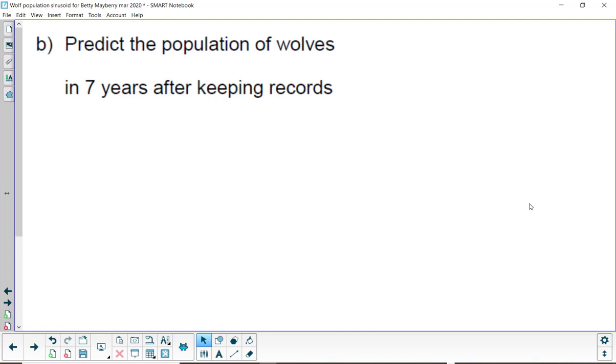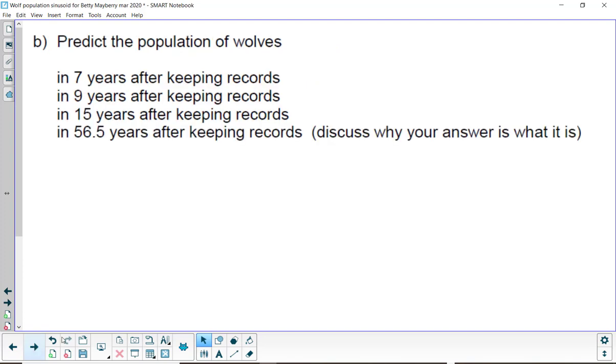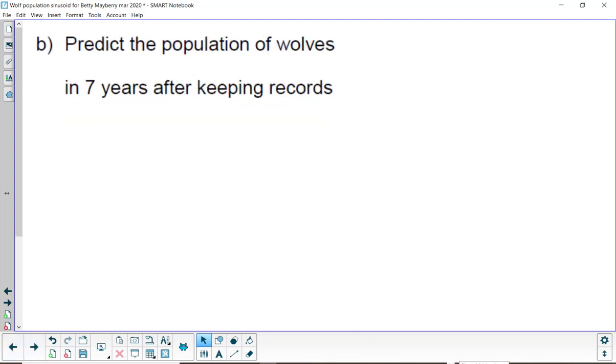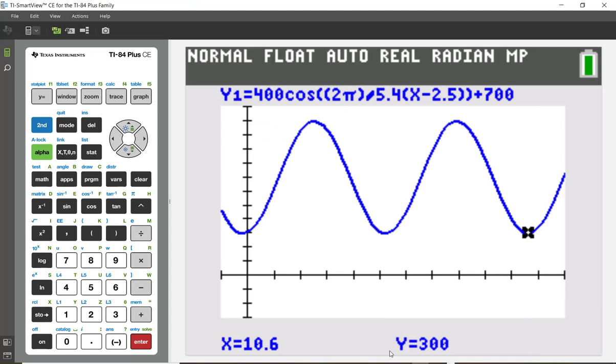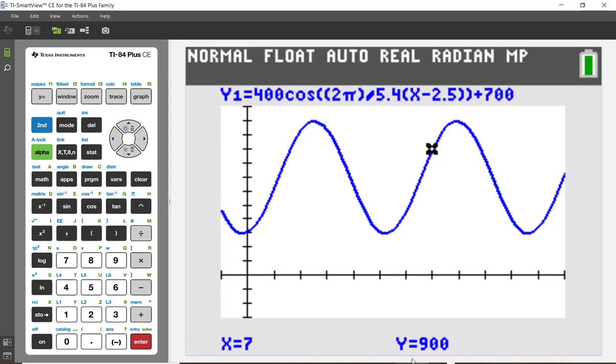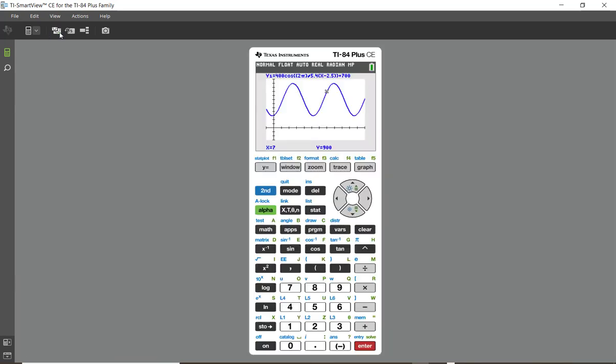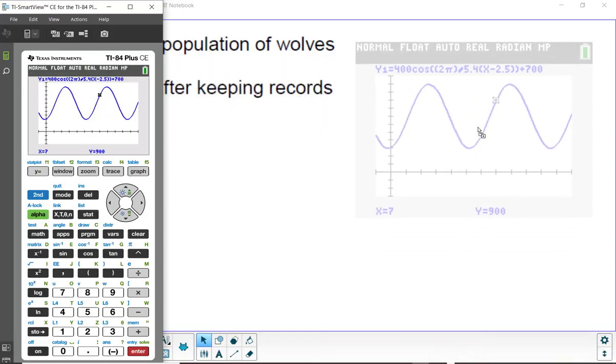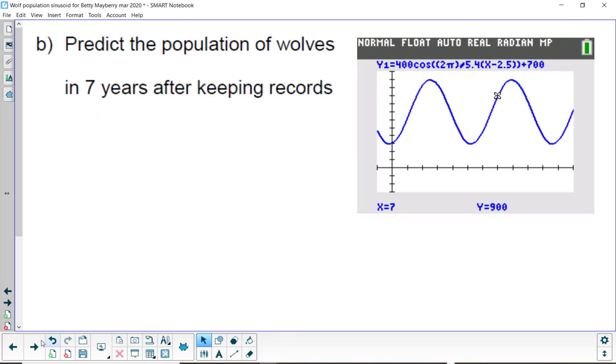Part B, predict the population of wolves in seven years after keeping records. There are several ways to answer this question. One of the ways would be just to trace on the curve. So, I will go ahead and press trace. And I want to trace to seven. And according to this, at seven years, there are going to be 900 wolves. By showing that, I'll pull this right off. And you can see that it's 900.